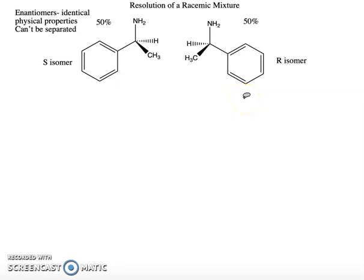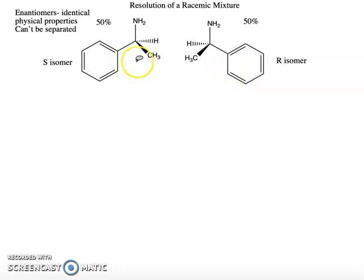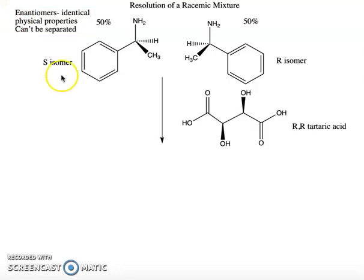We need to do something to these so that they're no longer enantiomers, and then we can separate them. One of the things we can do for a pair of enantiomers that have a basic functional group, like an NH2, is react them with some sort of chiral acid. In this instance, we're going to use tartaric acid — specifically the R,R enantiomer of tartaric acid.